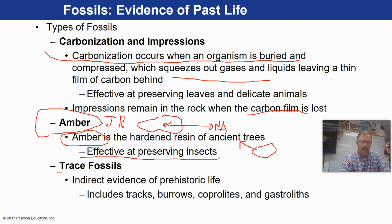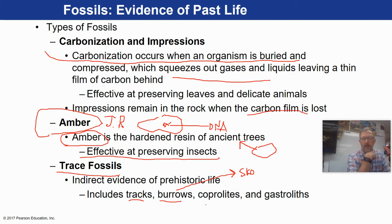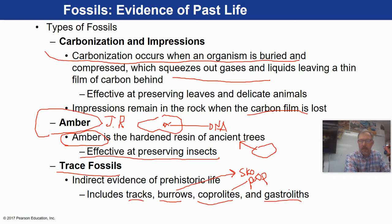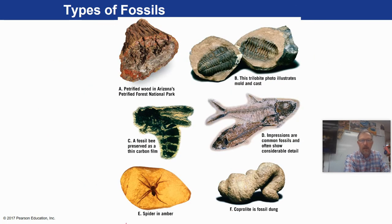A trace fossil comes in lots of different types. You can have tracks left by animals or burrows. A type of burrow found around here is called a skolithos — that's when a worm burrows through a layer and leaves a hole behind that gets fossilized. Everybody loves the coprolite, which is essentially fossilized poop — yes, we have found coprolites in class. A gastrolith is a stone that dinosaurs used to grind up their food, similar to what birds have in their crop.